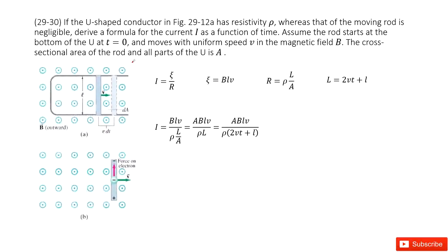We can see we have this U-shaped conductor with a moving bar. And this moving bar in the magnetic field will bring the induced EMF, and this induced EMF will bring the induced current in this loop.